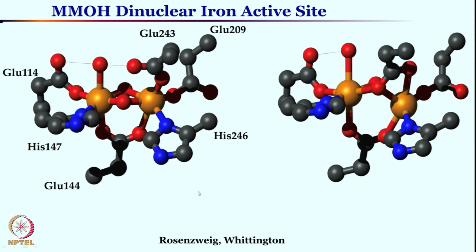These are the resting states of the catalytic cycle. The methane monooxygenase dinuclear active site looks somewhat similar to hemerythrin, where the two iron centers were supported by histidine — three on one side, two on the other. Here, glutamate replaces some of those histidine sites, but there is quite naturally similarity between hemerythrin and the methane monooxygenase active site.